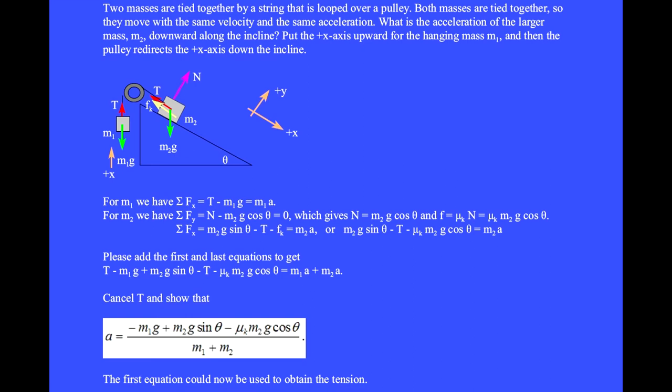Two masses are tied together by a string that is looped over a pulley. Both masses are tied together, so they move with the same velocity and the same acceleration. What is the acceleration of the larger mass, m2, downward along the incline?